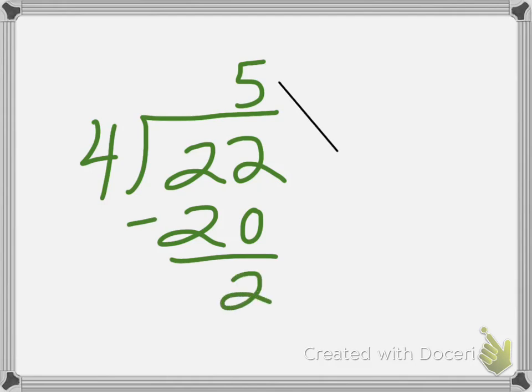So how do we turn that into a fraction that we can use? Well, that 5 becomes the whole number. The answer to the division becomes 5.